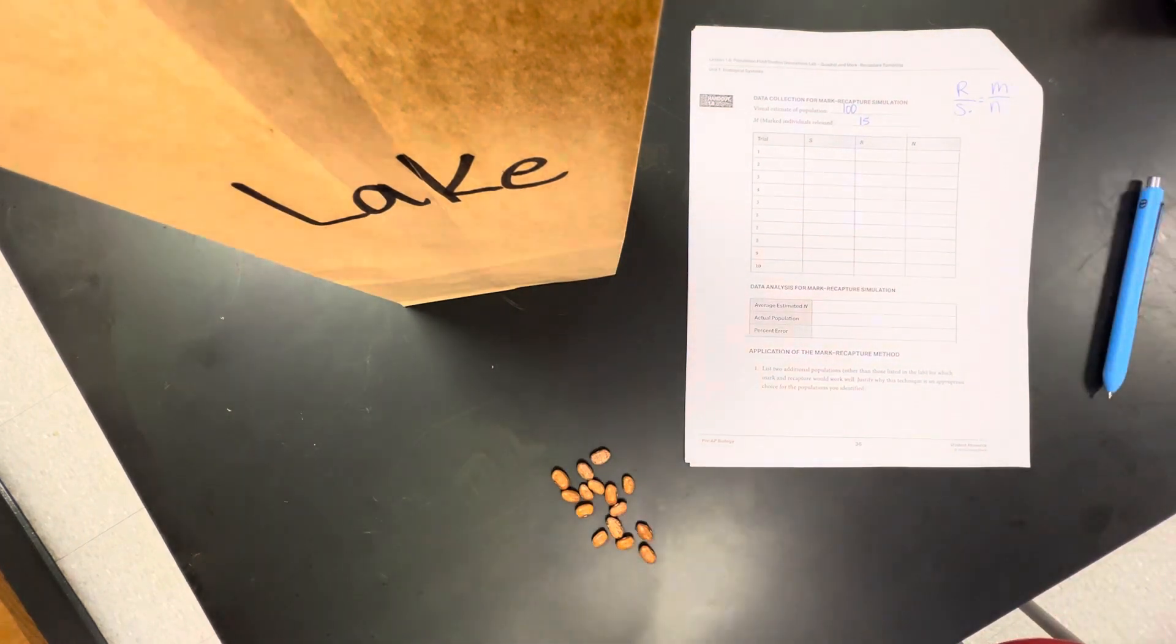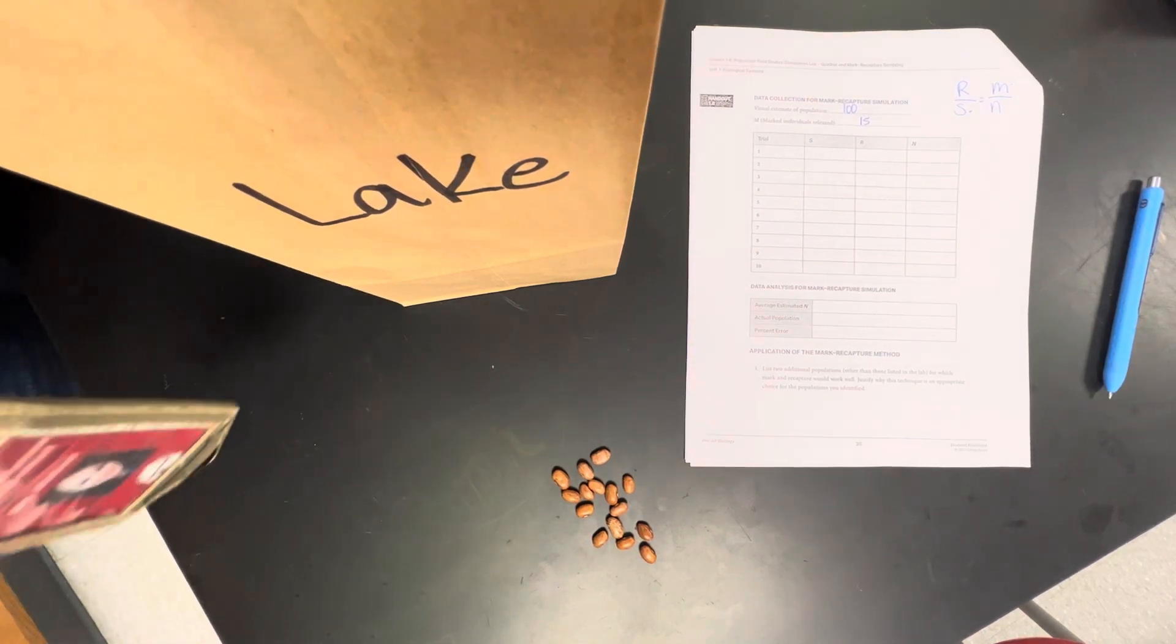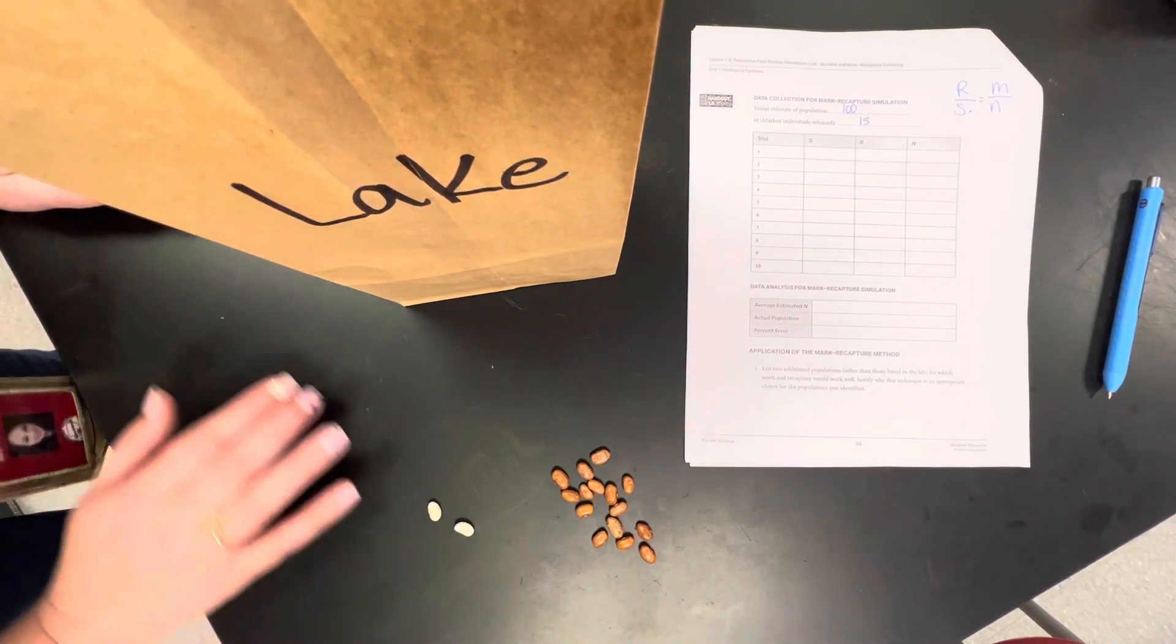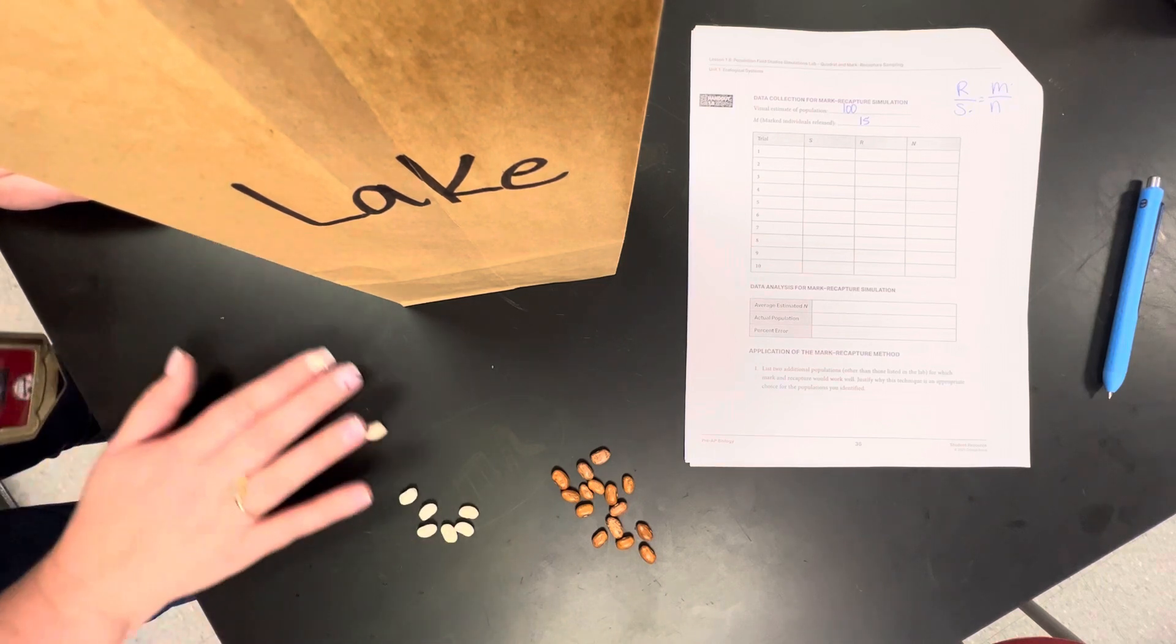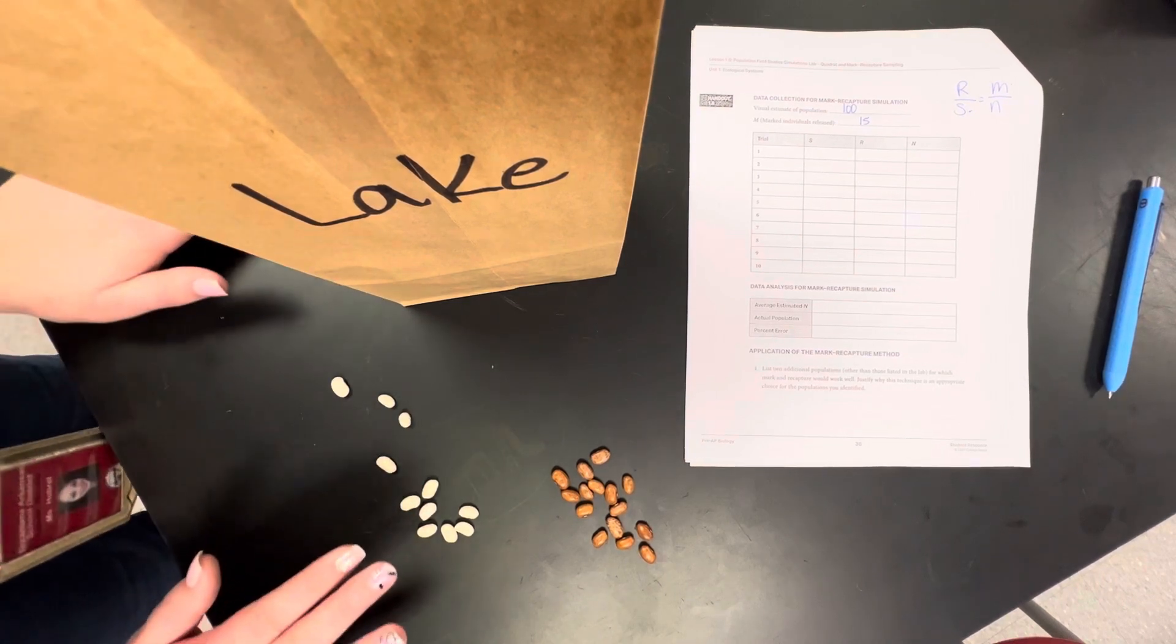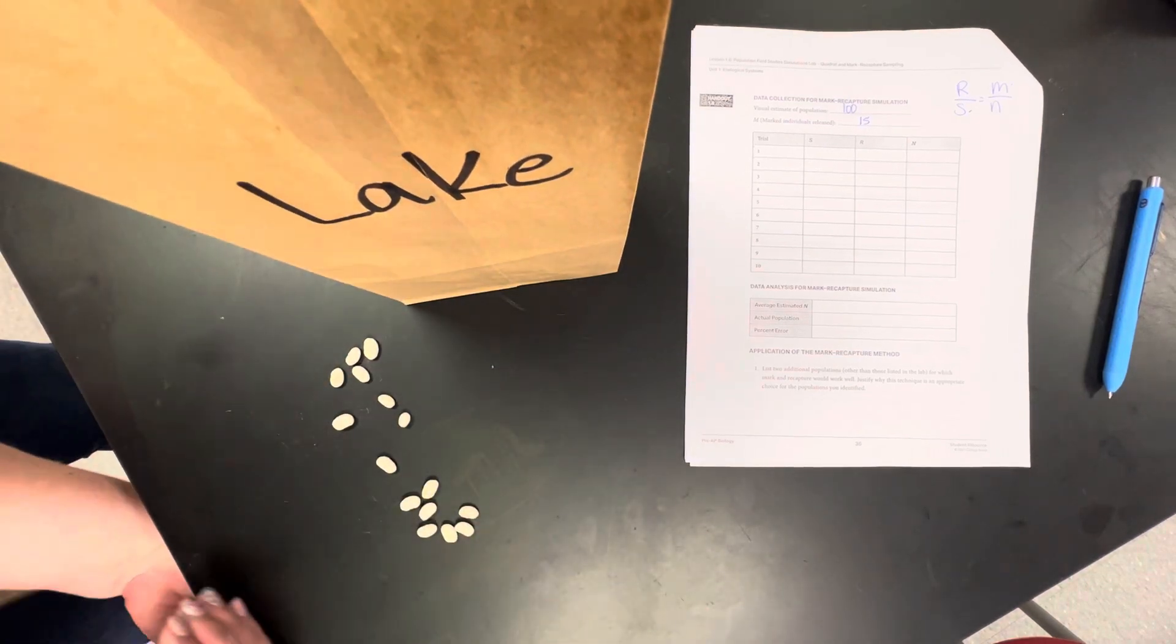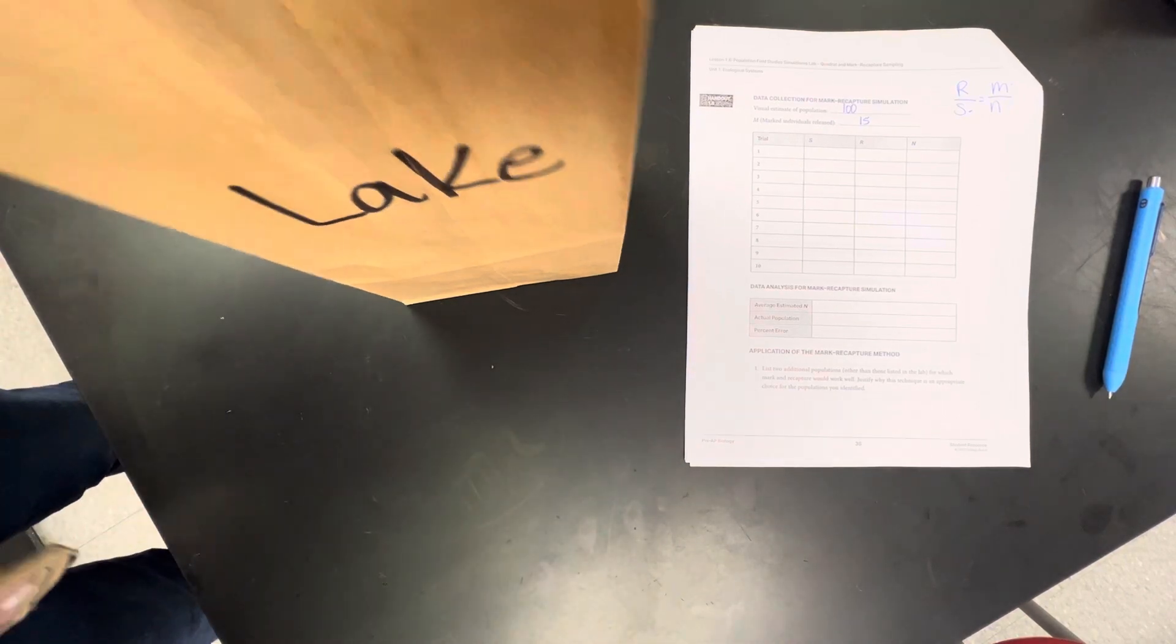So if this was trail mark and recapture sampling, I would paint these. But I can't. So I will replace them with white beans just so this will represent the marked ones. So we have 5, 6, 7, 8, 9, 10, 11, 12, 13, 14, 15. Alright, so I am going to take these to the side. I am going to simulate these are painted and I will release these into the bag.